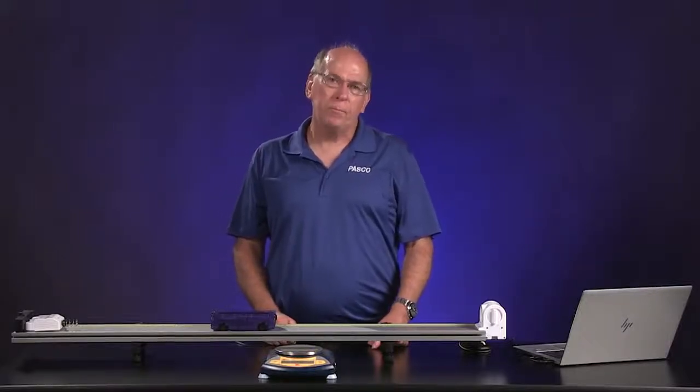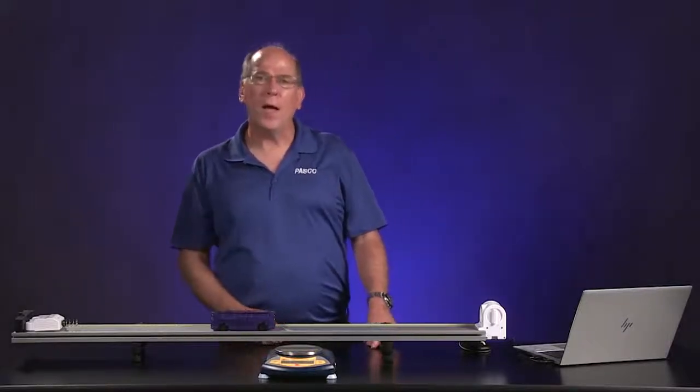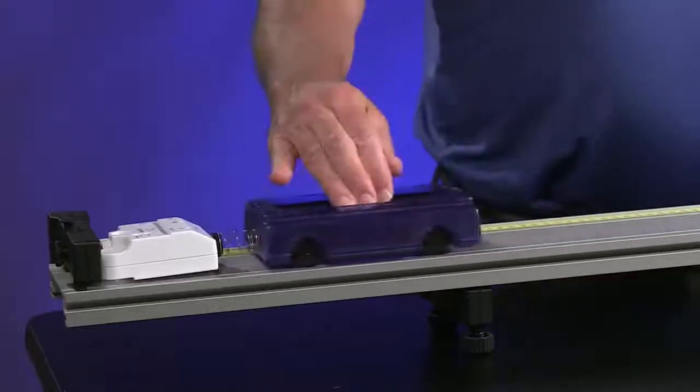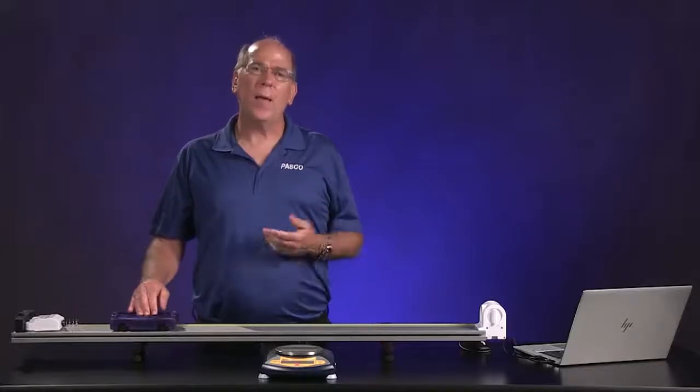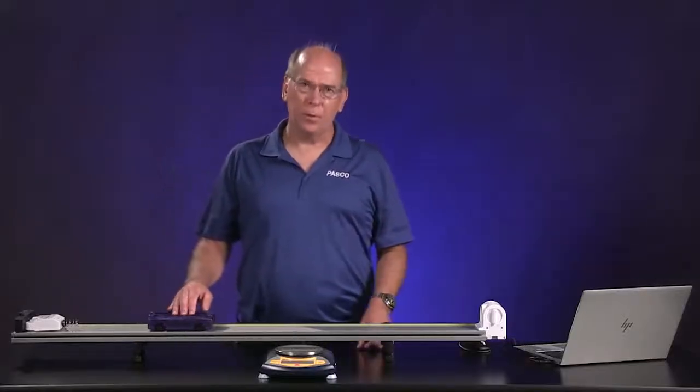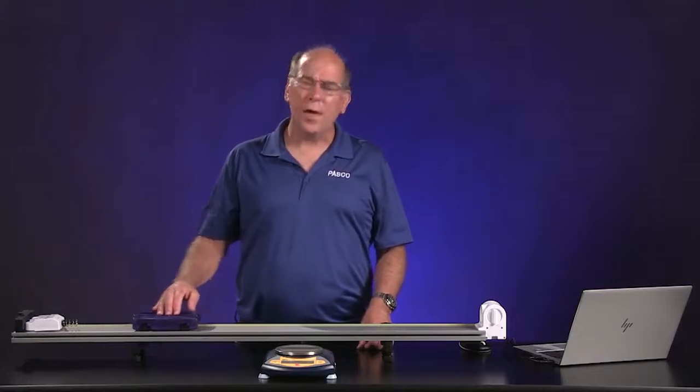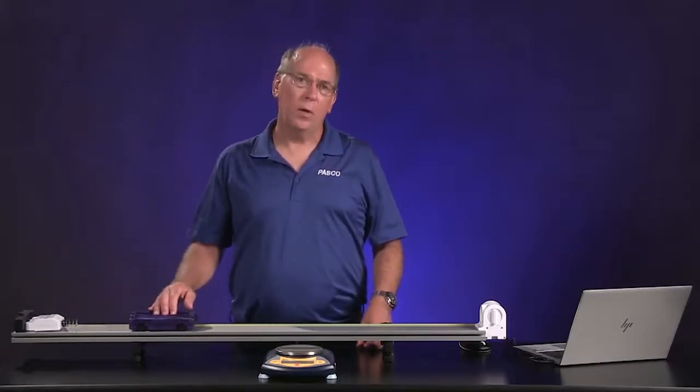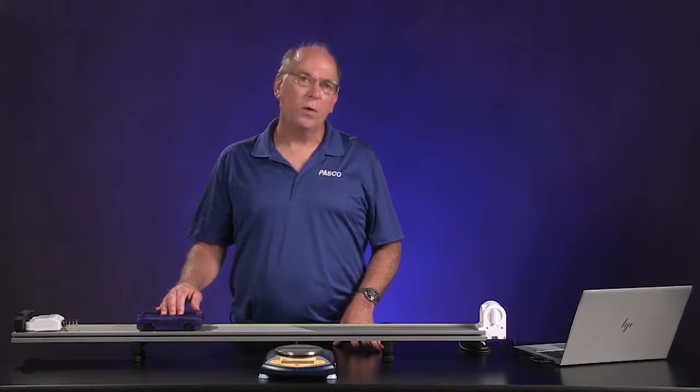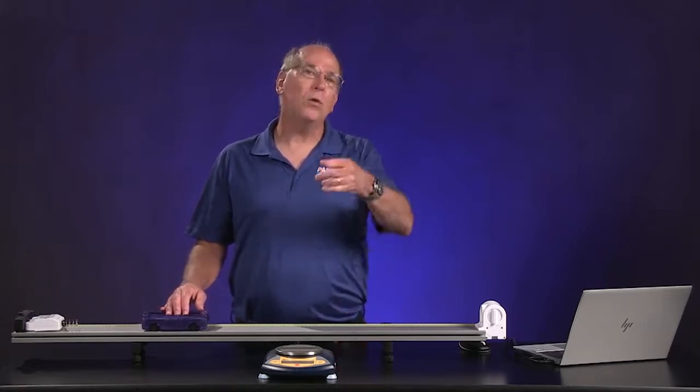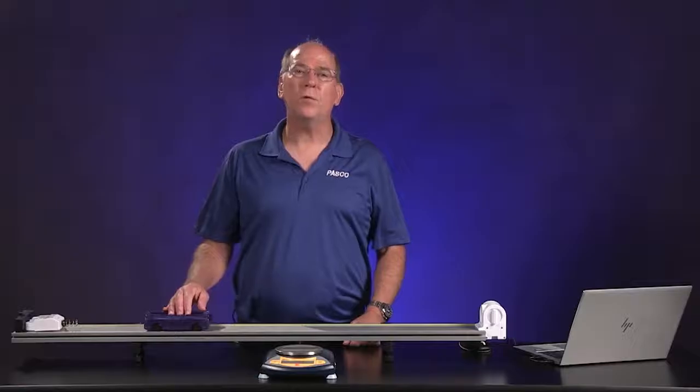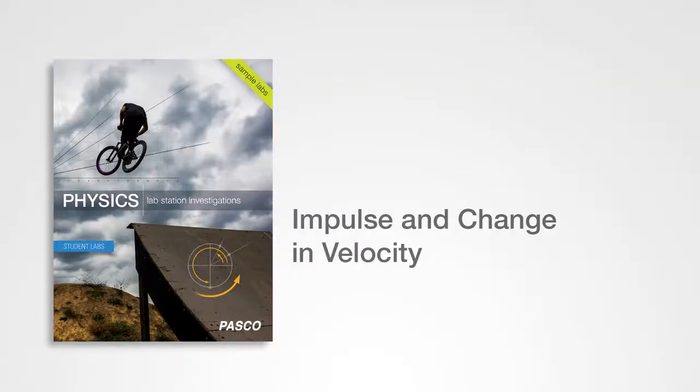We know from Newton's third law that when two objects interact, they apply forces to each other that are equal in magnitude and opposite in direction. How do those forces change during a collision? How does this affect the motion of the objects? In this investigation, you will find out this is impulse and change in velocity.